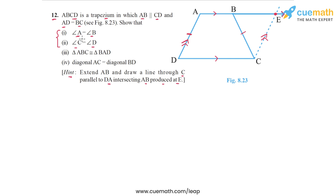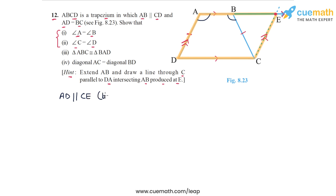First we have to prove that angle A and angle B are equal, and then angle C and angle D are also equal. To do that, focus on the quadrilateral ADCE. In this quadrilateral, both pairs of opposite sides are parallel. AD is parallel to CE by construction — we constructed CE to be parallel to DA.